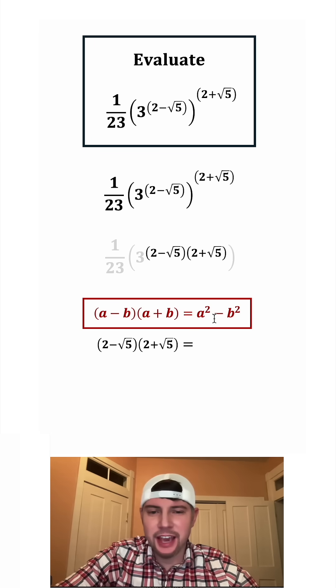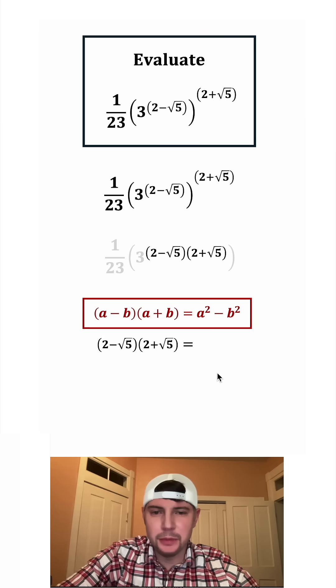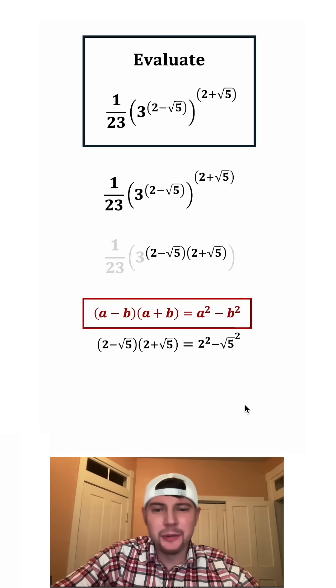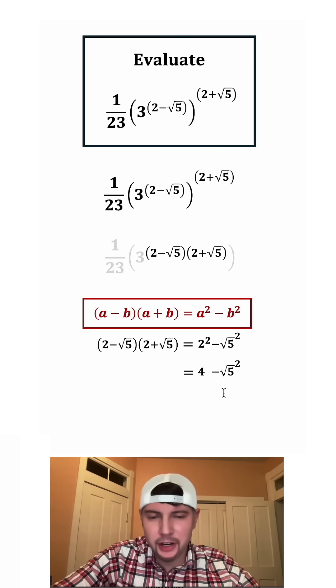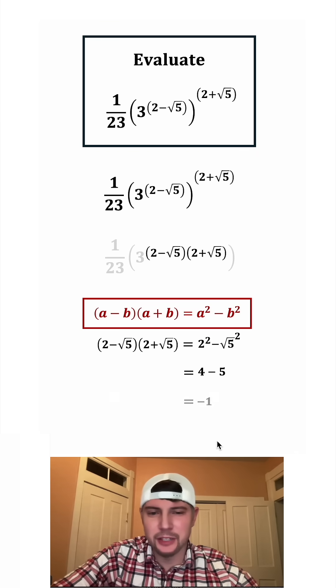So in this case, A is equal to 2 and B is equal to square root of 5. So this will end up being 2 squared minus root 5 squared. And then we can simplify that. 2 squared is equal to 4 and root 5 squared is equal to 5. And 4 minus 5 is equal to negative 1.